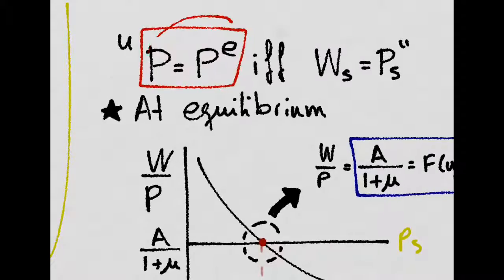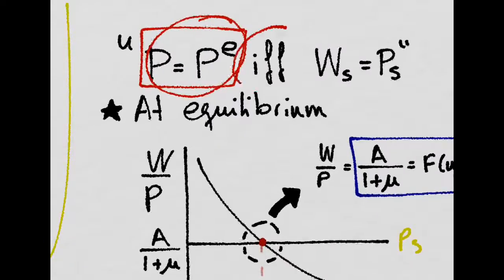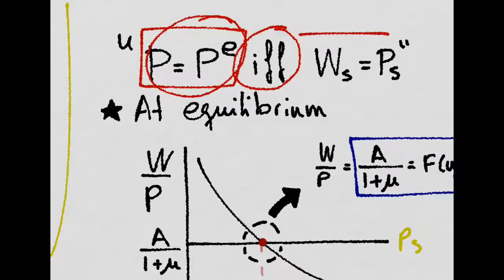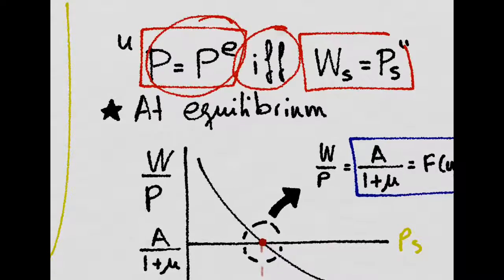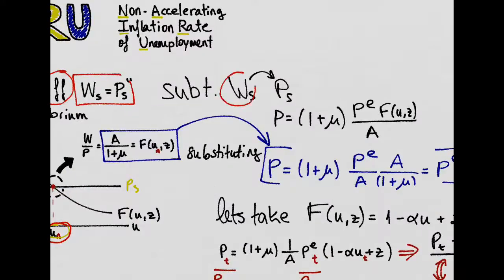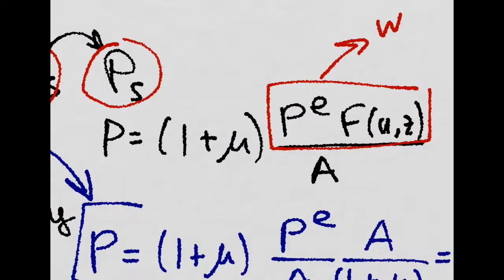But let's prove that this only happens if and only if we are at an equilibrium in the labor market. So we substitute the wage setting into the price setting. Remember we had wages here.